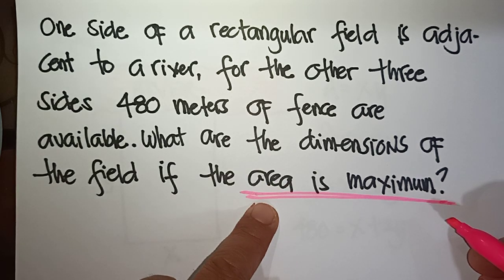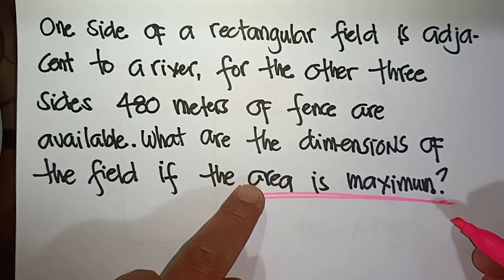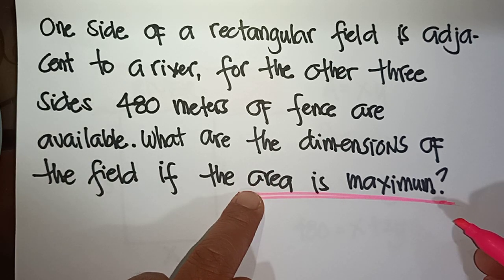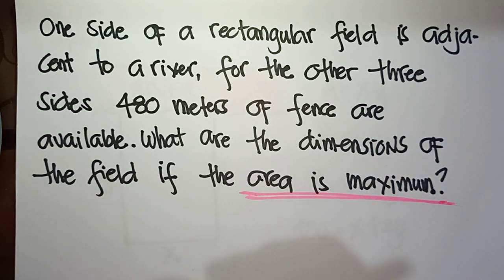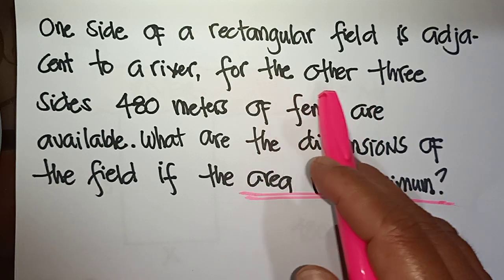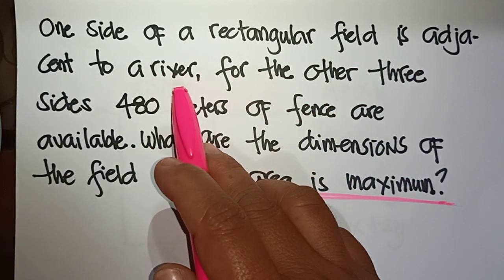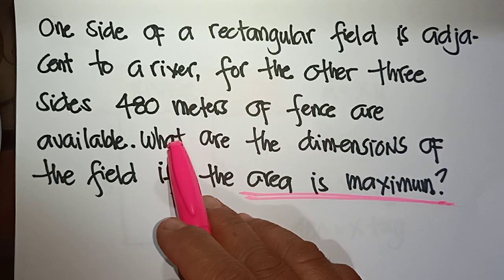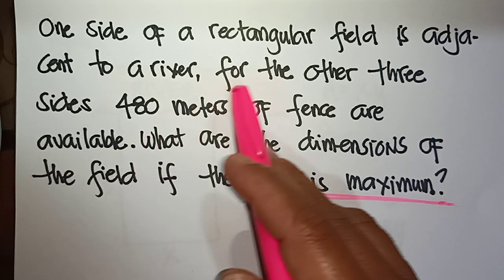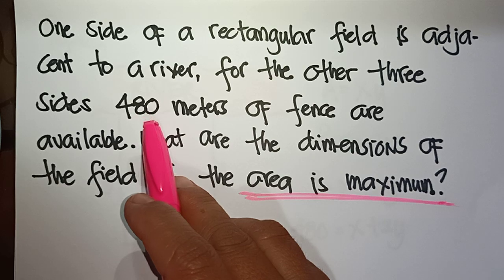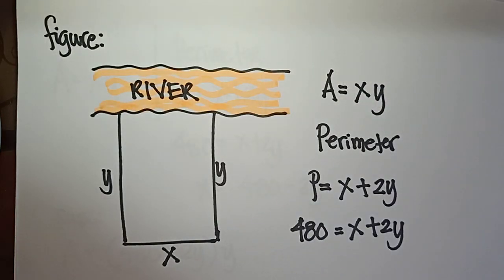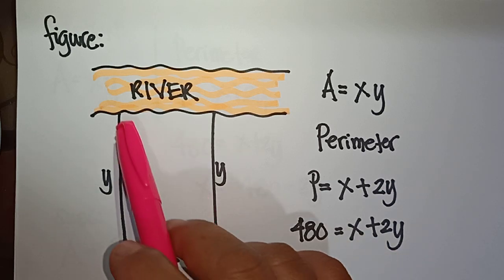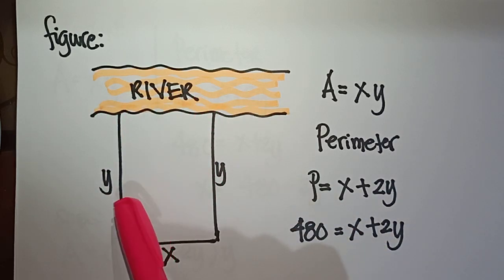We are going to find the derivative of the area of the rectangular field. Since one side is adjacent to a river, only three sides need to be fenced. The available fence is 480 meters. Let's look at the figure.